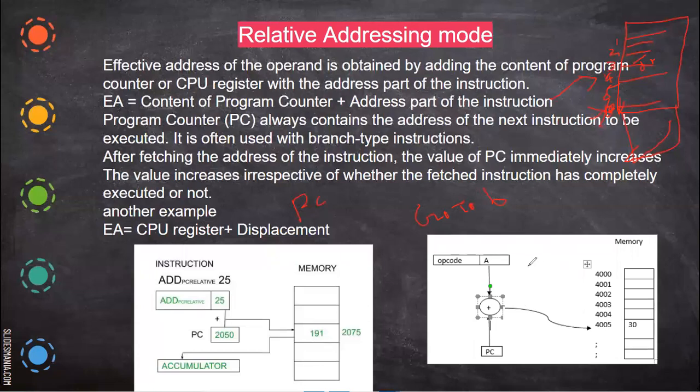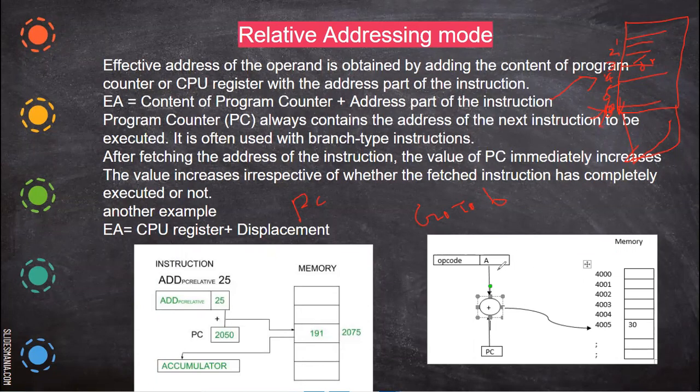So relative addressing mode, which is nothing but program counter value is added with the address part of the instruction, and then it will go to the particular memory location and the data or instruction is fetched from that. That is what relative addressing mode.